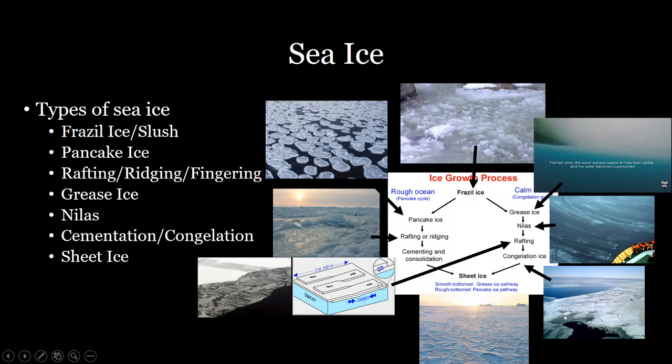The larger expanses of ice we call ice floes — the iceberg equivalent of sea ice. Icebergs come from glaciers, whereas ice floes come from sea ice.